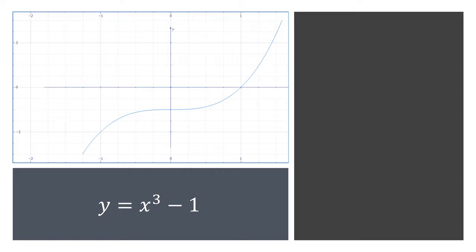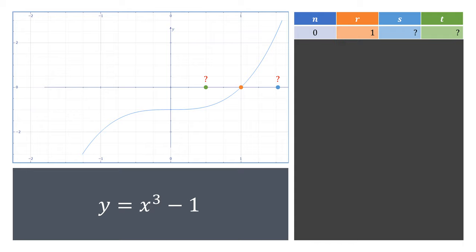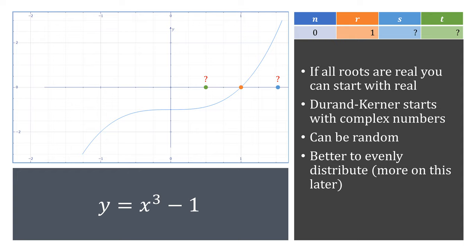Let's look at the polynomial x cubed minus 1. We could start at the value of 1 to find this solution, but what about the other solutions? Where would we even start to find those? When all of our roots are real, we can start with real numbers, but Durand-Kerner usually starts with complex numbers, which could be random, but it's actually better to evenly distribute them.